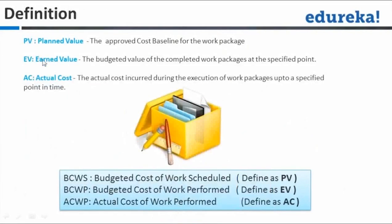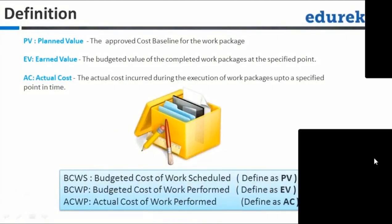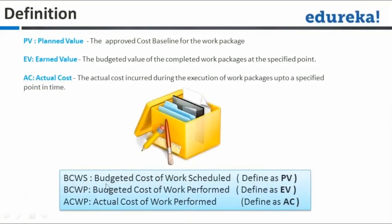There are certain things called planned value (PV), earned value (EV), and actual cost (AC). Earlier, planned value used to be called BCWS — budgeted cost of work scheduled. Earned value used to be called BCWP — budgeted cost of work performed. And actual cost was called ACWP — actual cost of work performed. In the PMP exam, they might use PV, EV, AC, or BCWS, BCWP, ACWP — we should know what each means.